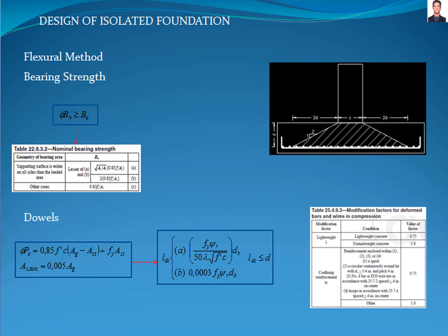The next step is to calculate the dowels that will transfer the factored force to the foundation. Equations 22.4.2.2 and 16.3.4.1 of the ACI 318 standard allow calculation of the reinforcement and minimum reinforcement area required, respectively. Phi is a reduction factor according to table 22.4.2.1. Pu is the factored axial load, Ag is the cross section of the pedestal, Ast is the area of the reinforcement, and fy is the yield strength of the reinforcement. This equation can be used only when the eccentricity is less than 10% for tied reinforcement and 5% for spiral reinforcement, as written in section R22.4.2.1 of the ACI 318 standard.